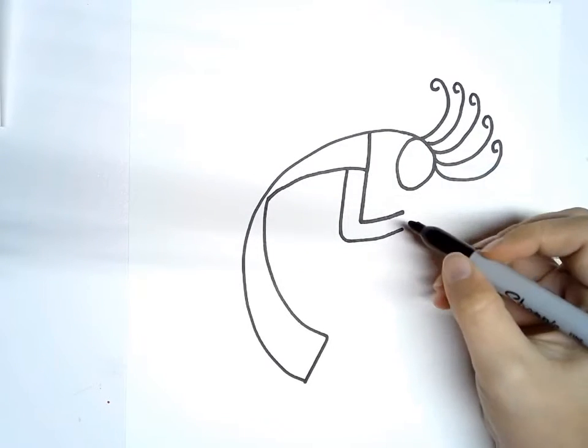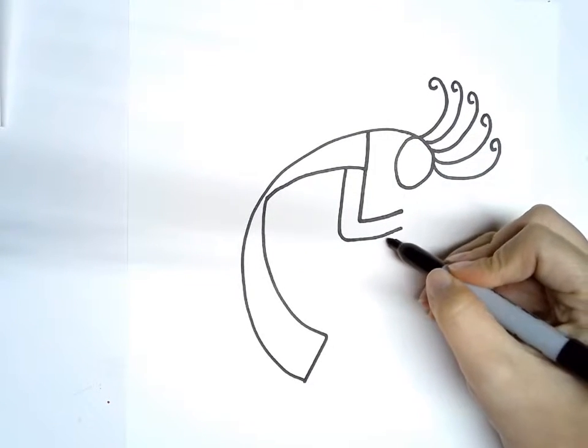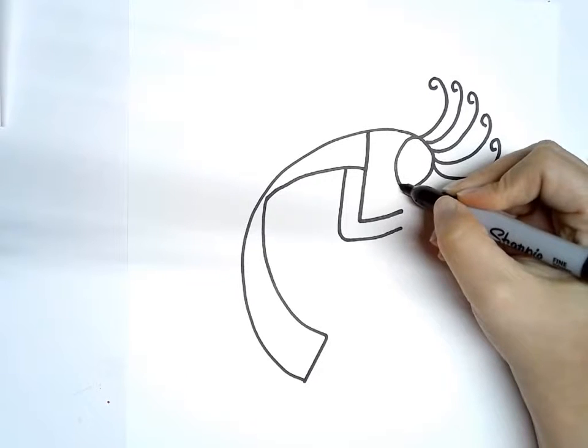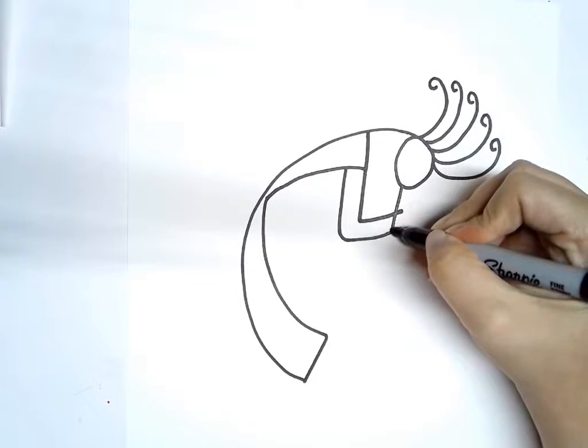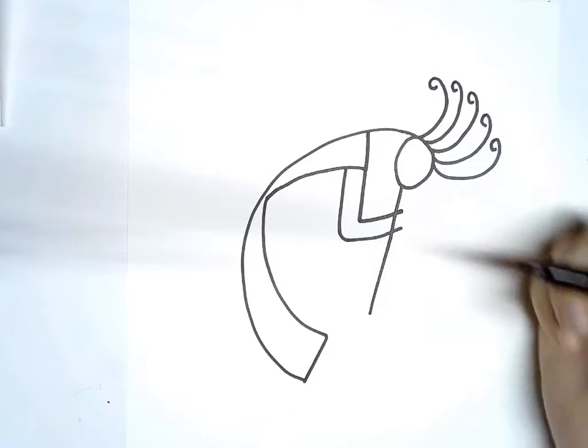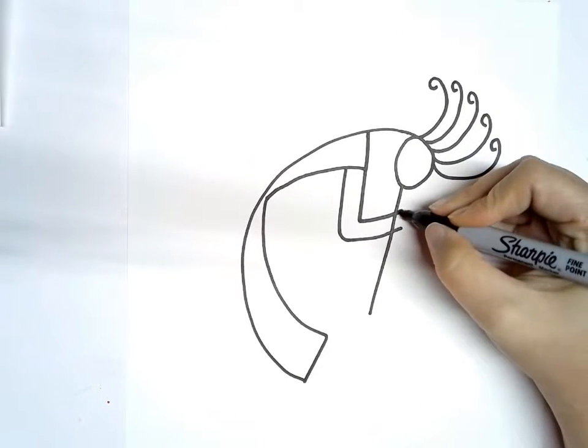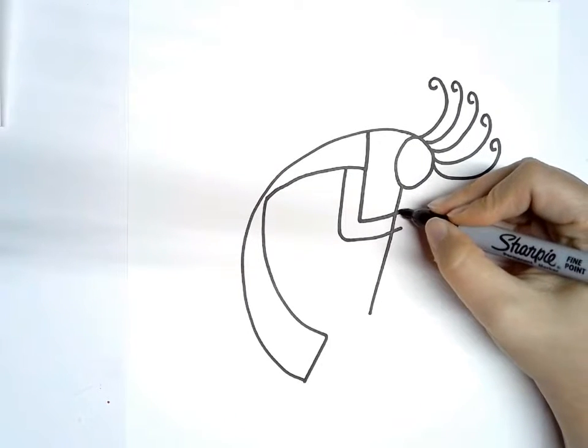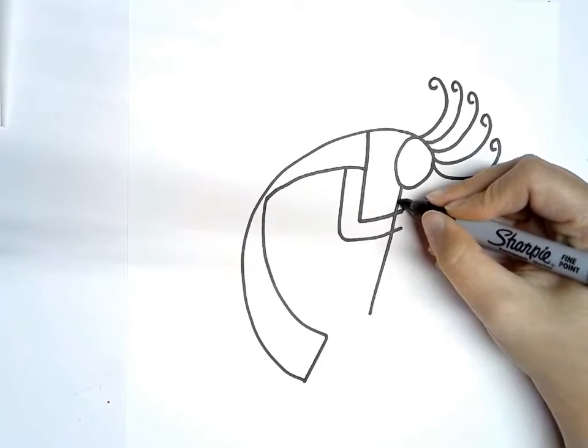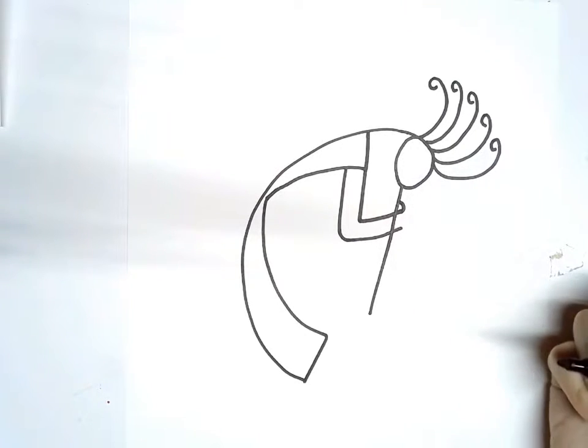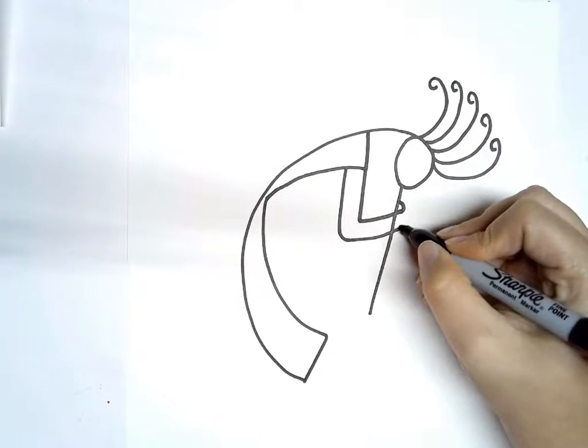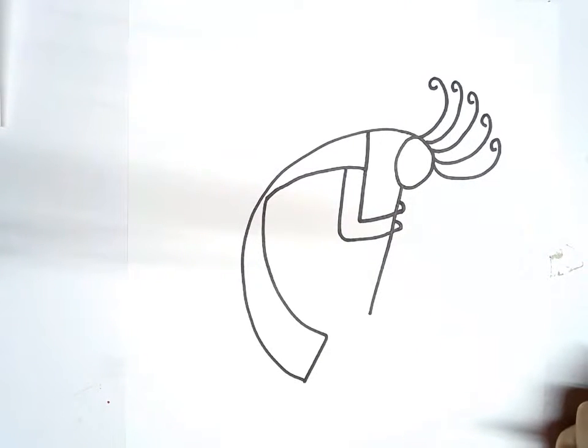And then we're going to draw the flute. It's going to overlap these lines a little bit, coming out of the mouth of the flute player and down like that. And we're going to draw the little hands curving around holding the flute. So it's going to curve around and touch that line. Same thing with this one. It's going to curve around and touch the line that represents the flute.